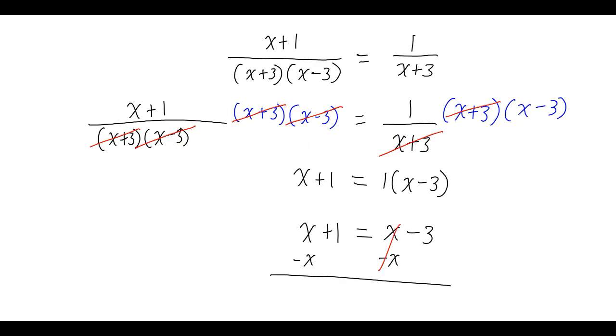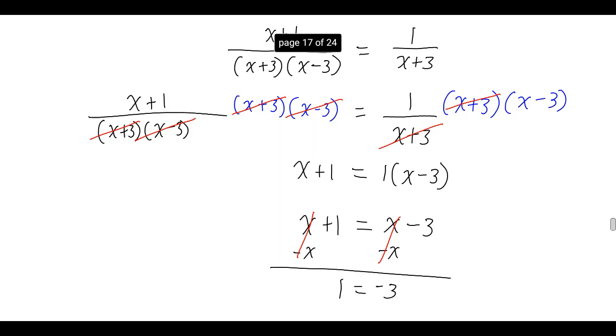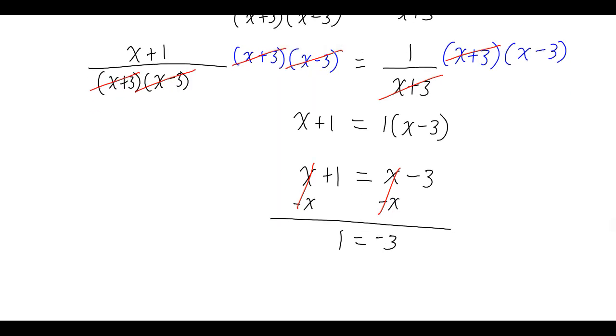Cancels it out on the right, but on the left it also cancels to leave me with 1 equals negative 3. Well, since 1 does not equal negative 3, this is not true. A false statement, which means that my original equation has no solution.